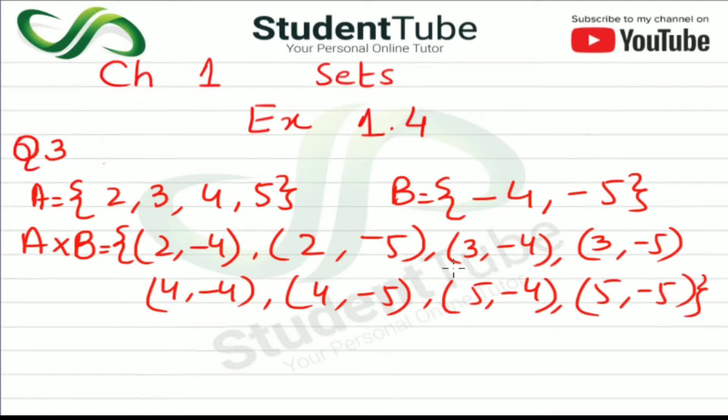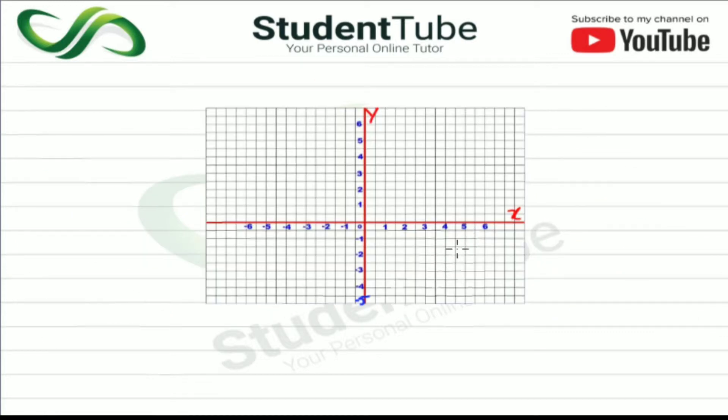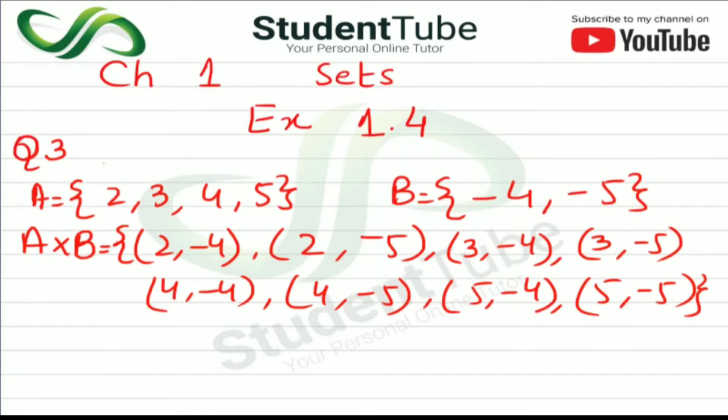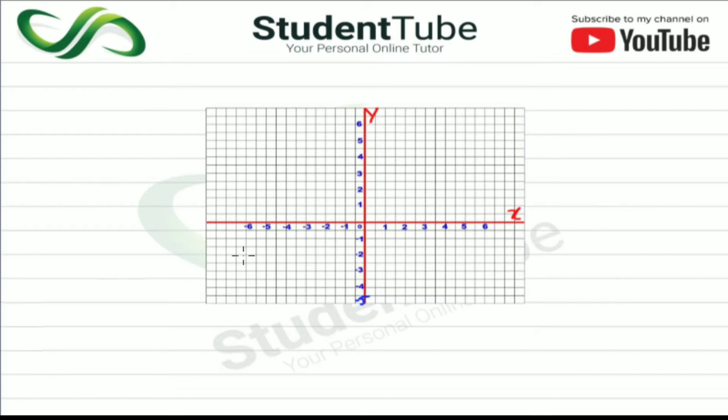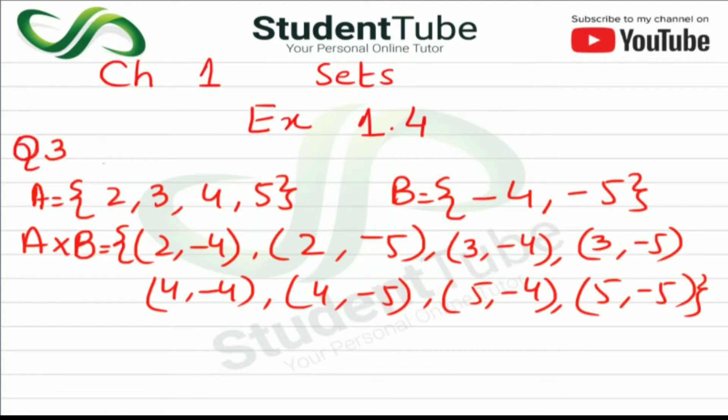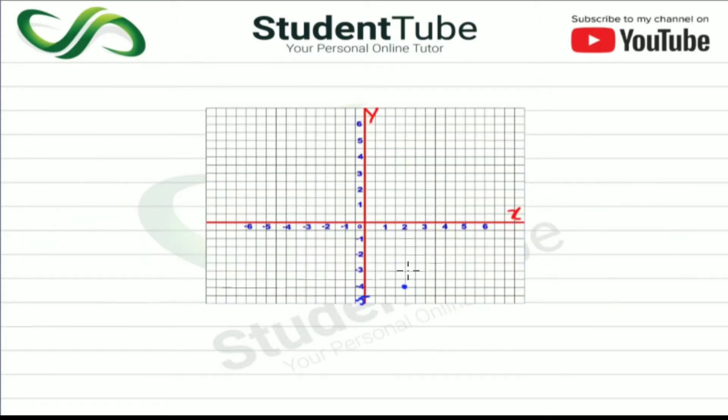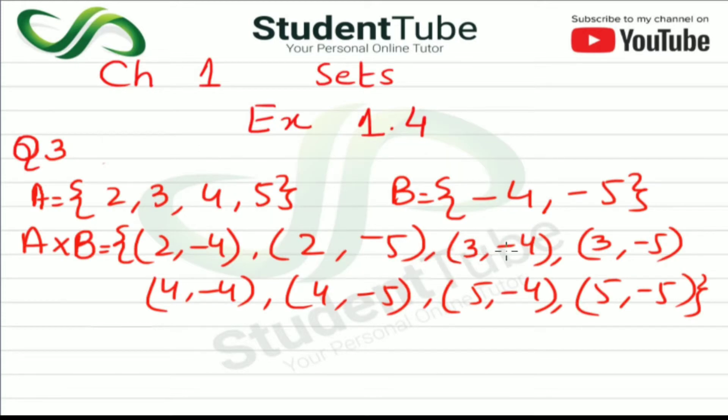We have A cross B. Now we will plot them on the graph. So this is our graph, now we will plot the points here. First is 2 and -4, this is our first point. Second is 2 and -5. Then this is 2 and -5, this is our third point.